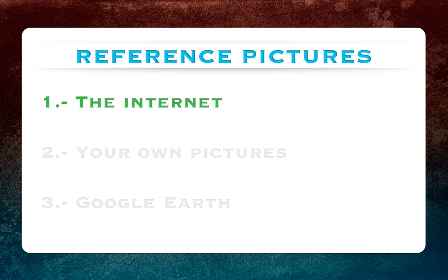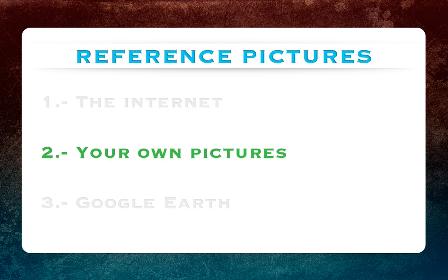Number two: take your own pictures. Especially if you are working on a project that requires a specific building or any other element that you can have personal access to. All you have to do is take your camera, go to the location, and start shooting. I recommend that you take as many pictures as you can — open shots, close shots, and the same objects from different angles. Don't forget to take shots of any details you can later model or texture, because those little details give realism to your renders. In this category we also include projects where your clients give you the references themselves.